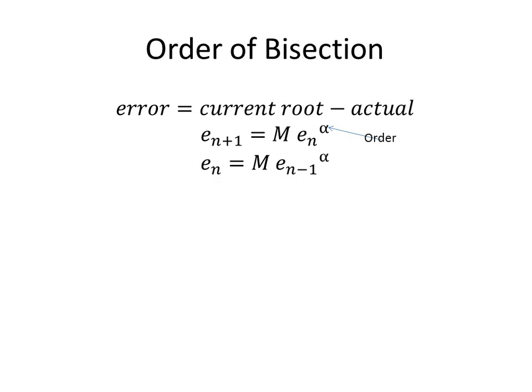And if we take that same equation and we go back a step, we can find the previous error, that e_n is equal to that constant M times the previous error raised to alpha.